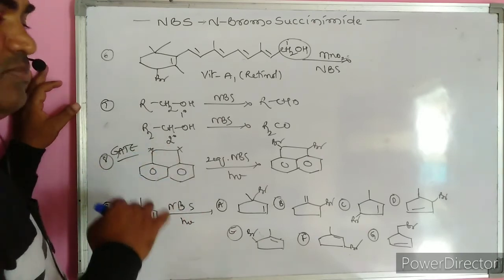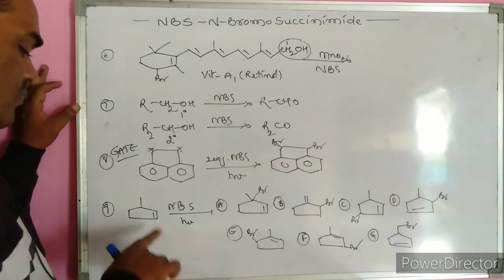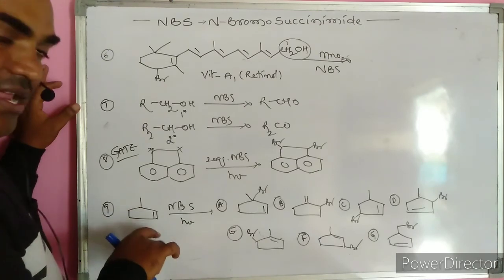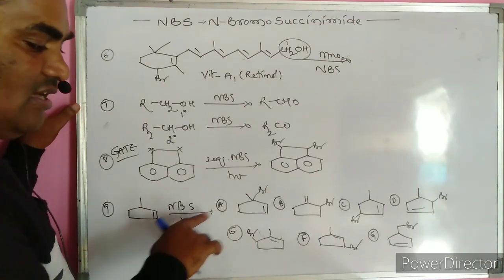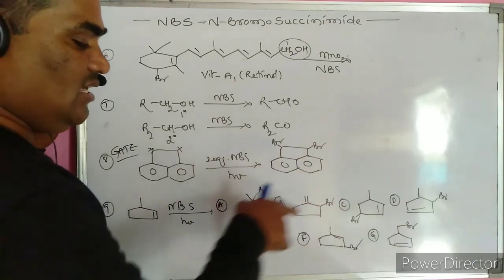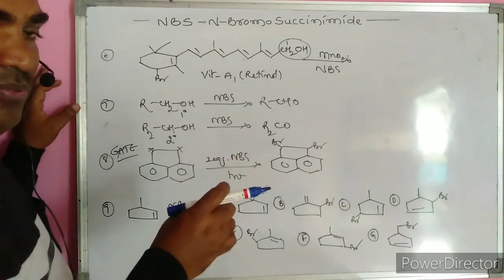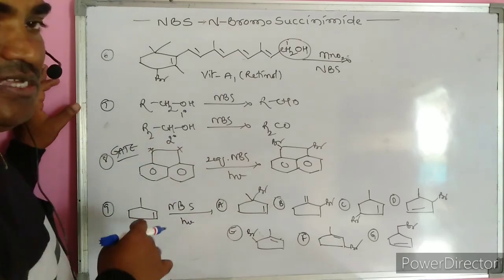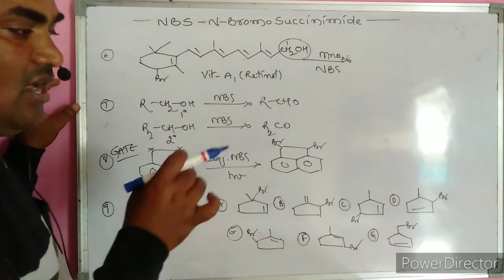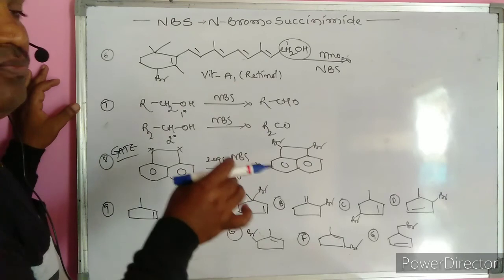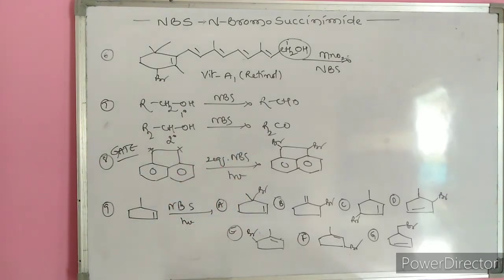Finally, methyl cyclopentene is given with NBS in the presence of sunlight, and multiple choice options A through G are provided. Please try to work on this question, test yourself, and post your answer in the description box. Thank you.